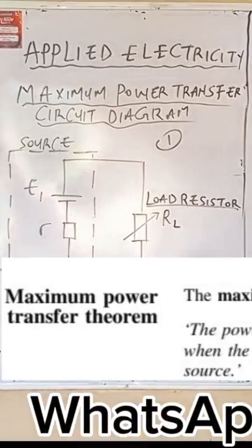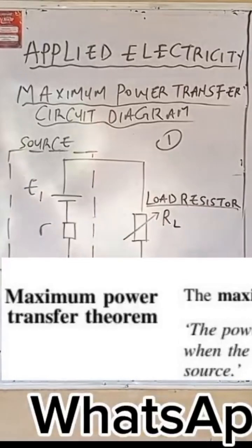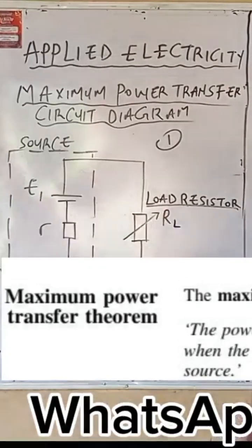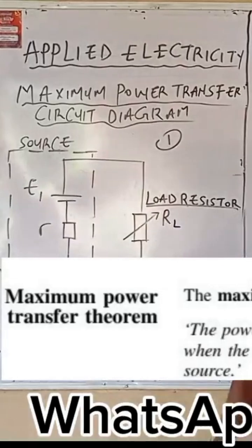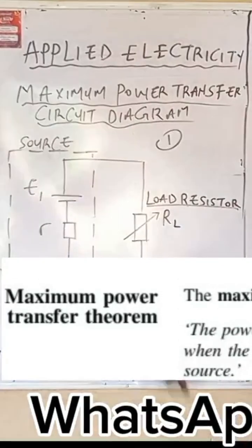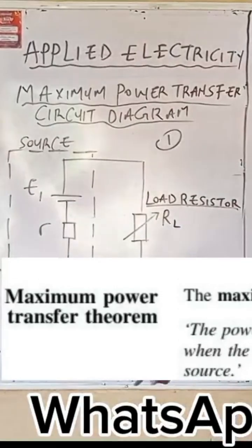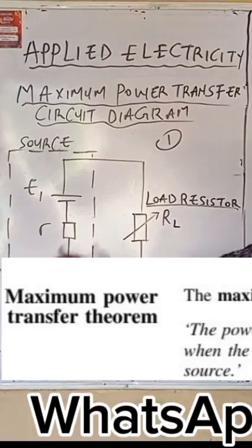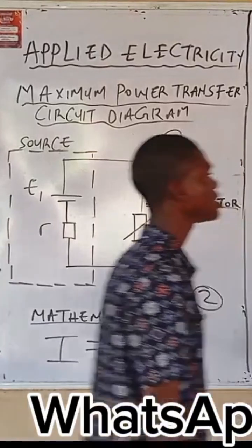The maximum power transfer theorem states that the power transferred from a source to a load resistor is at its maximum when the load resistor is equal to the resistance of the source.